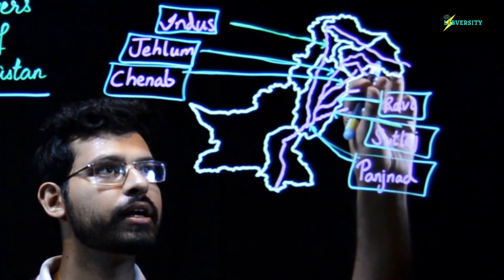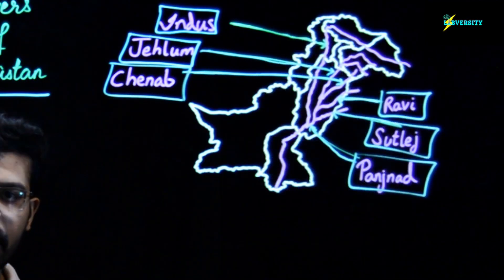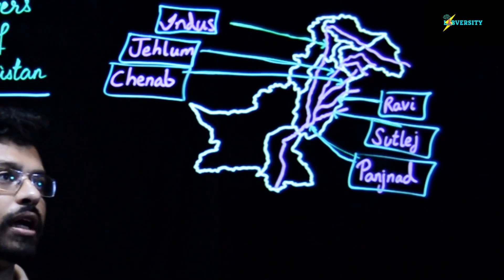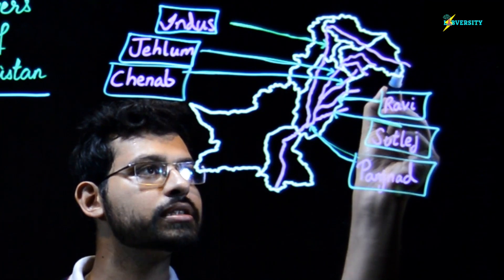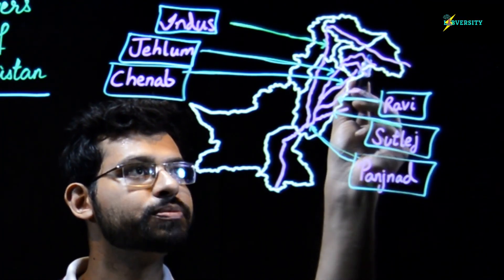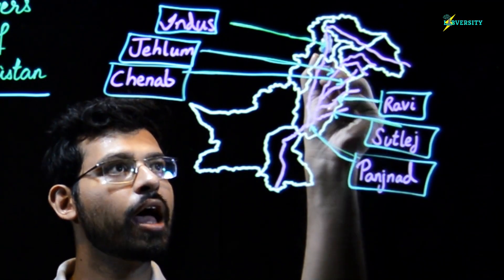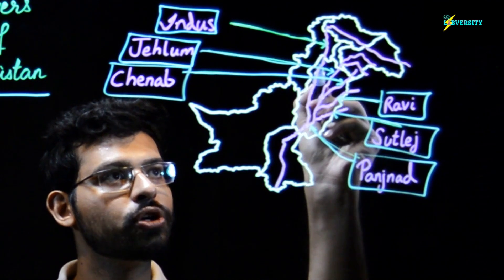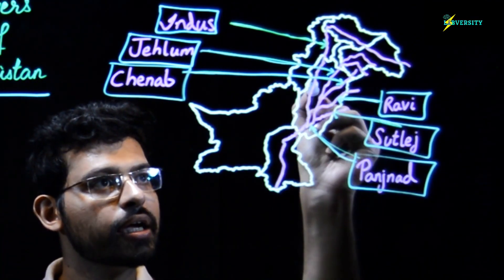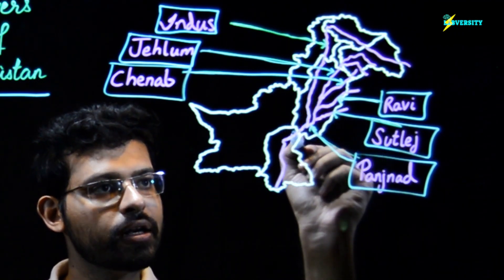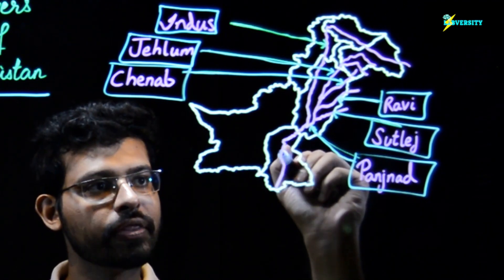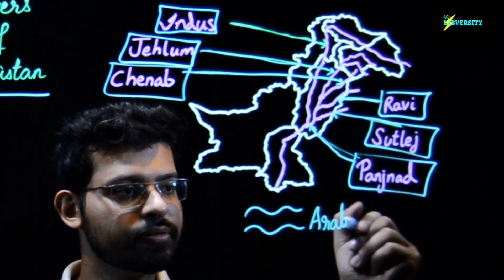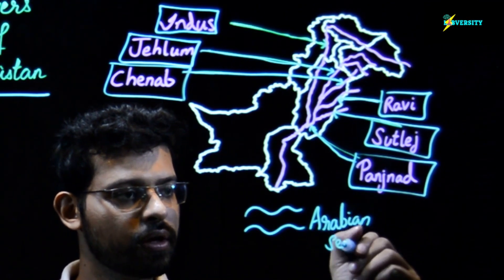On this map we can see the route that River Indus is taking, and on its way it is being joined by different rivers which we call the tributaries of River Indus. At this point River Indus is entering into Pakistan, flowing through the Kashmir region, going into the Gilgit-Baltistan region, then flowing through the Khyber Pakhtunkhwa region, taking a turn and flowing into the Punjab region. It flows southwards through the rest of Punjab and then flows down into the Sindh province, where it ultimately drains into the Arabian Sea.